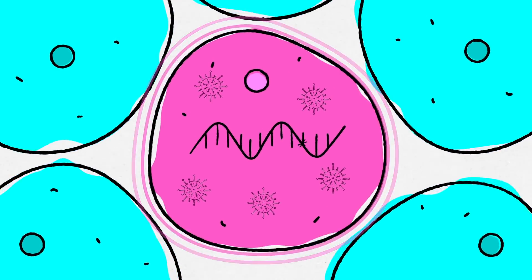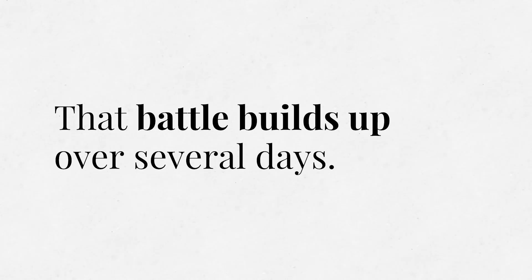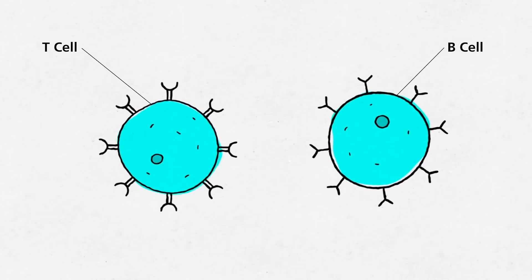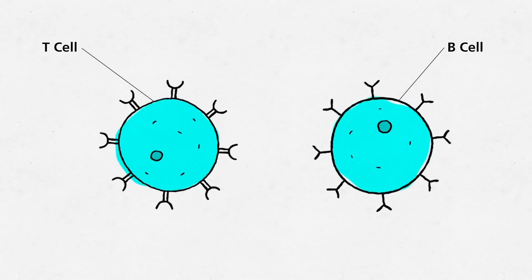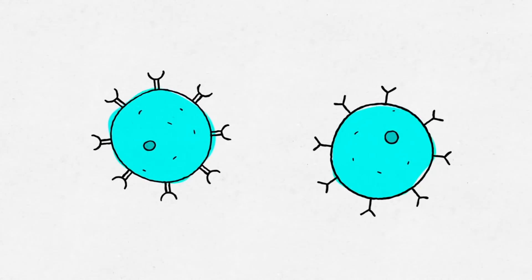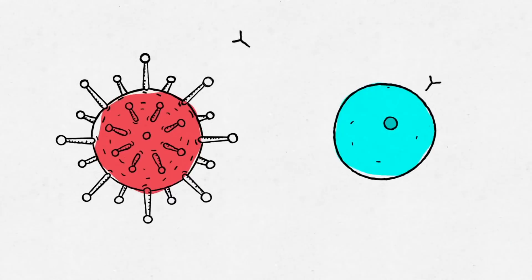One of the first things infected cells do is alert nearby cells to the attack, calling immediately for help from others in the immune system. Some of these proteins — cytokines, chemokines, interference-stimulated genes — are capable of interacting directly with the virus and attacking the replication machinery. That battle builds up over several days, reaching a peak when the body's cellular artillery arrives: your T cells and your B cells, the real heavies that start coming in after maybe five or six days of infection.